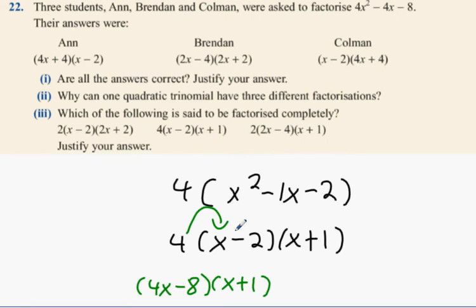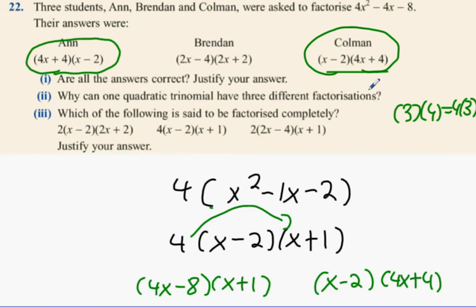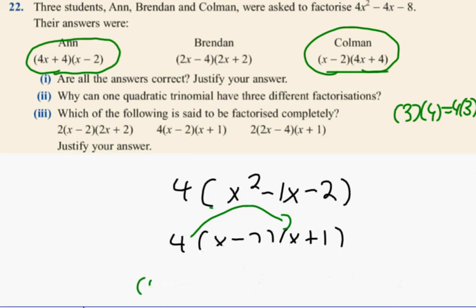You can multiply in the 4 here. And what would your answer be? 4X minus 8 into X plus 1. Is that correct? Yeah, it is correct. Or, instead of multiplying the 4 by the first one, what could I do instead? Multiply it by the second one. And what answer would that give me? X minus 2 into 4X plus 4. That make sense?